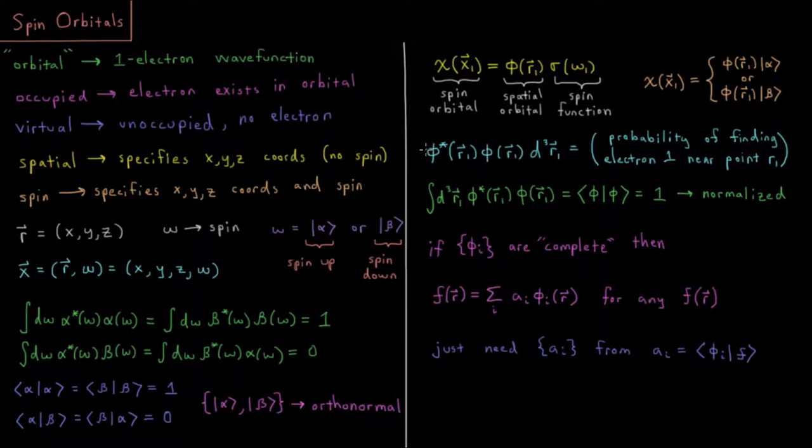And then going back to what we also talked about early in the quantum chemistry playlist, phi star, the spatial orbital, times phi, complex conjugate of the wave function times itself gives you a probability density for where you're likely to find that particle, or in this case, this electron in three-dimensional space.